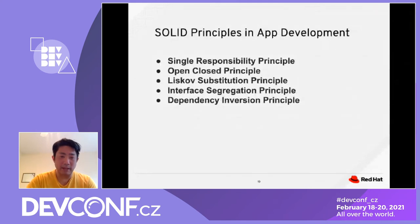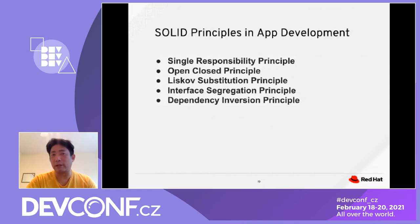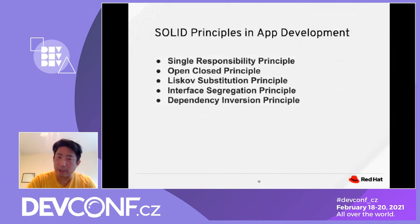Now that we have a high-level idea of what to look for at the container layer, let's look at the application layer. The first thing I would introduce is the SOLID principle — S, O, L, I, D: Single Responsibility, Open/Closed Principle, Liskov Substitution Principle, Interface Segregation Principle, and Dependency Inversion Principle. We will go over examples in the following slides to help you understand how to apply them in your application development.